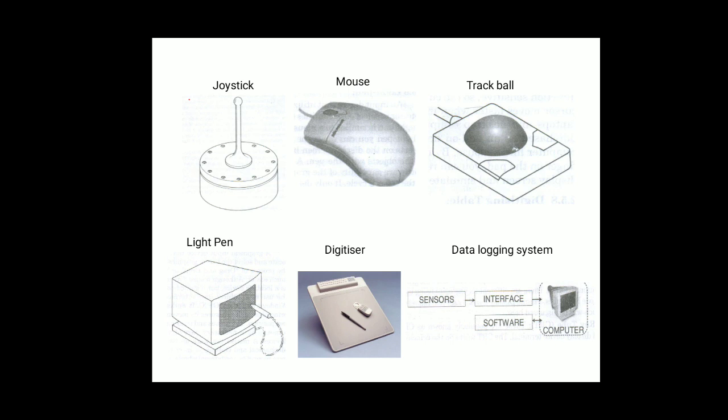A trackball is a movable ball mounted on a stationary device which can be rotated manually using fingers; it is used in video games. A joystick is a device used for playing video games as well as controlling machines and robots — the user moves a spherical ball with the help of a stick.